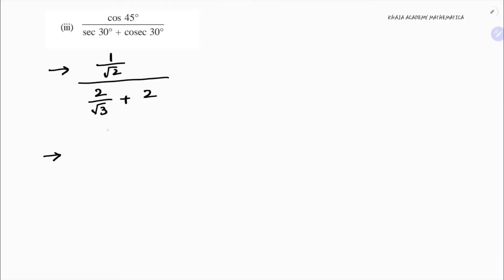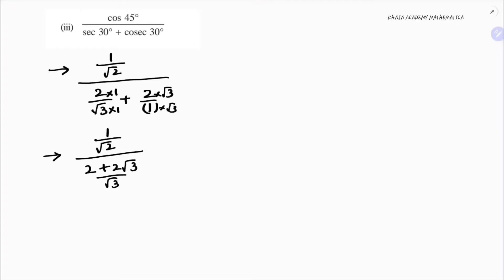So we have 1/√2 divided by (2/√3 + 2). The LCM of the denominator terms is √3. Multiplying through: 2/√3 stays, and 2 becomes 2√3/√3, giving us (2 + 2√3)/√3.